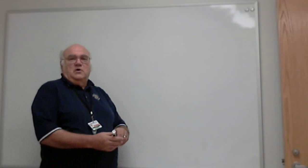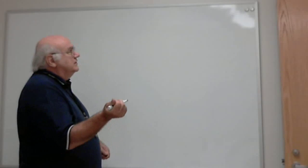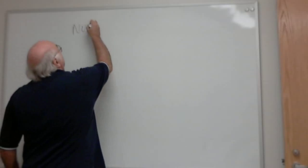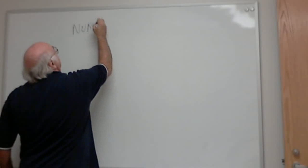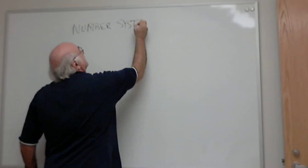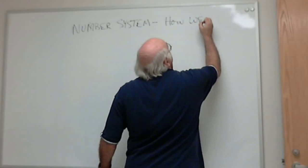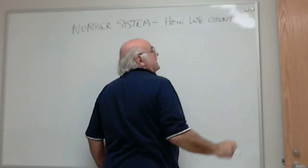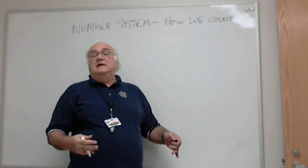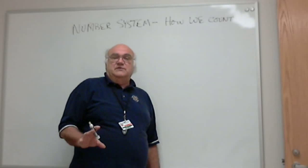Alright, let's take a few minutes this morning to talk about numbering systems. What is a numbering system? A numbering system is nothing more than how we count. Now, obviously your mathematics professors will have a lot to say about that — it's oversimplified, childish, whatever. But basically, to us, a numbering system is how we count.